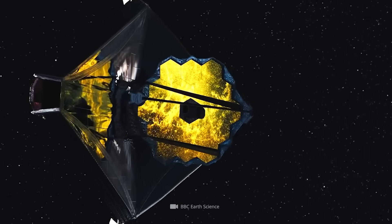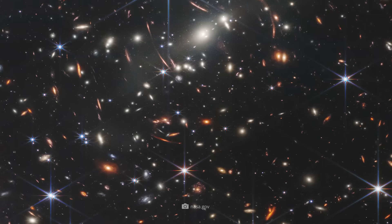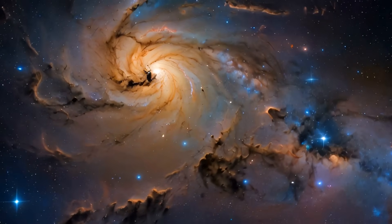The first deep image from the James Webb Space Telescope revealed thousands of galaxies in the early universe that shouldn't be there.